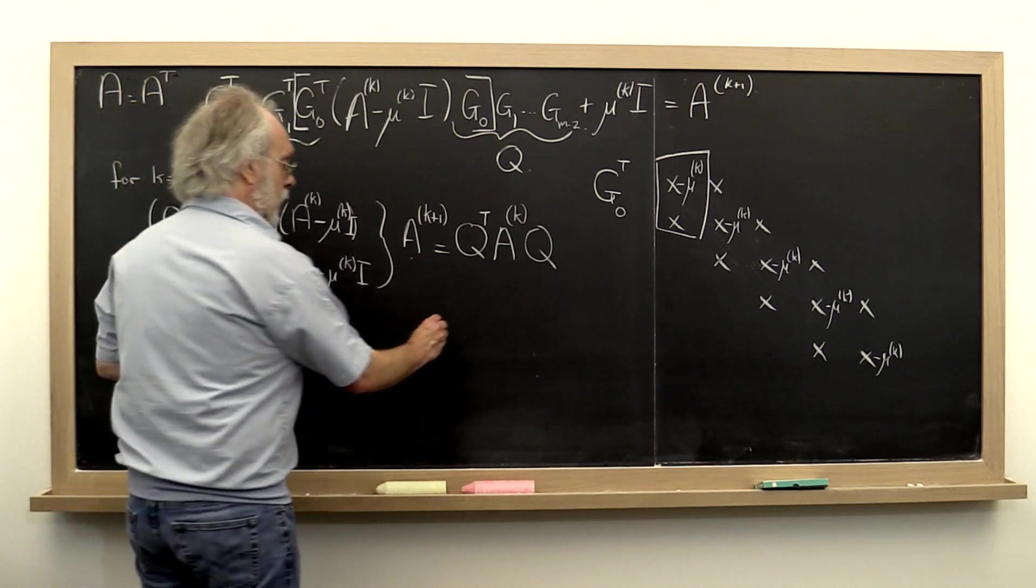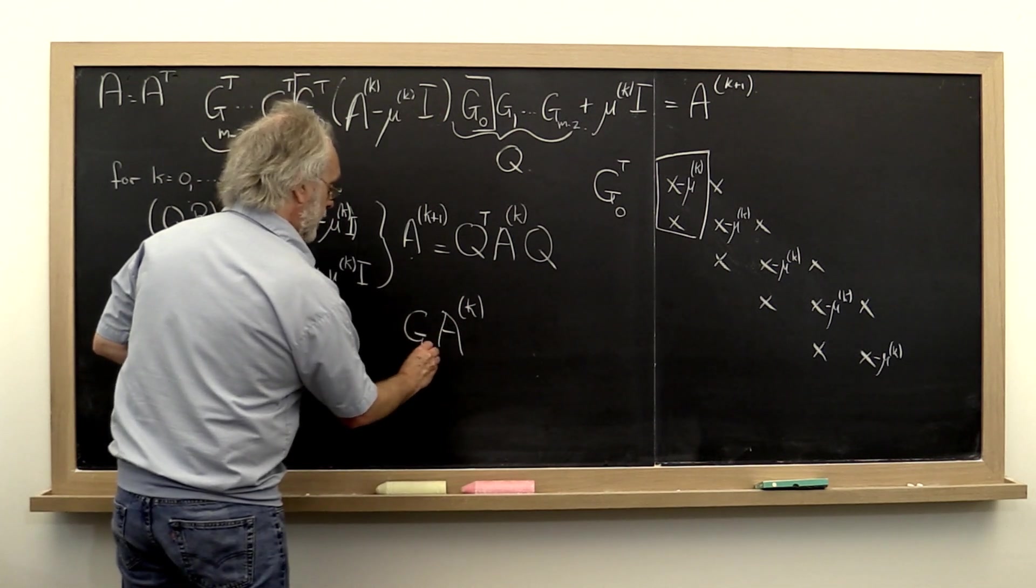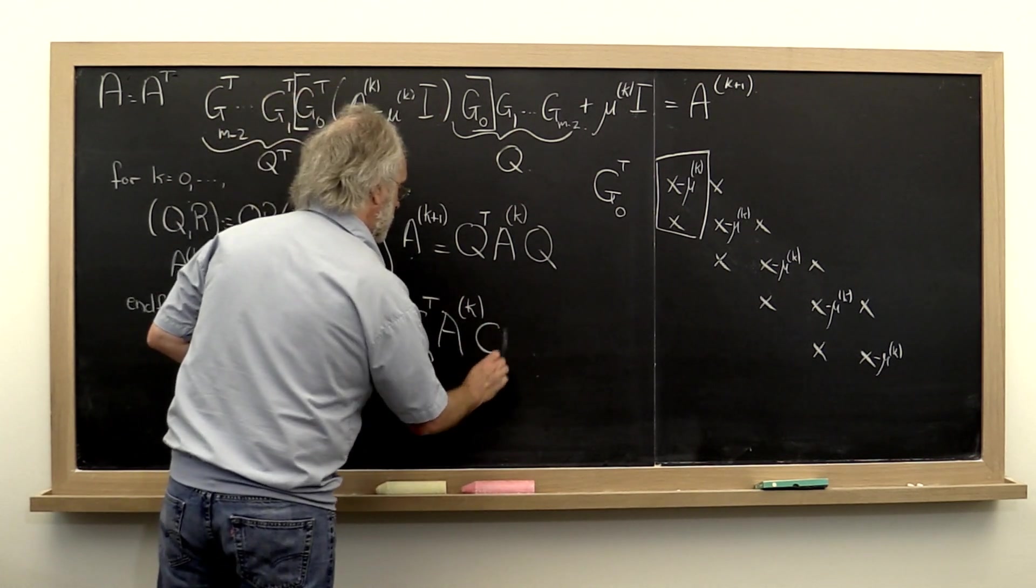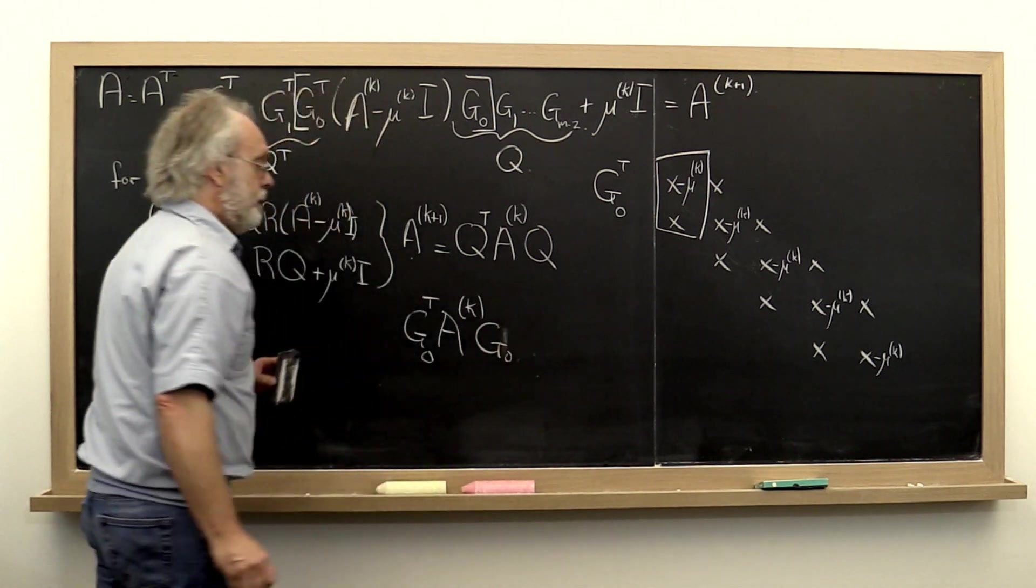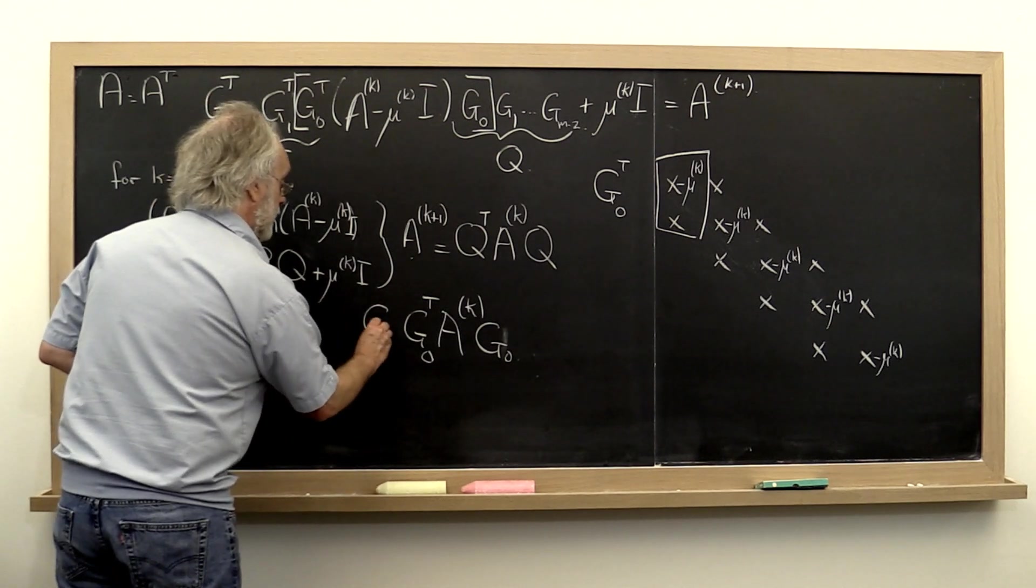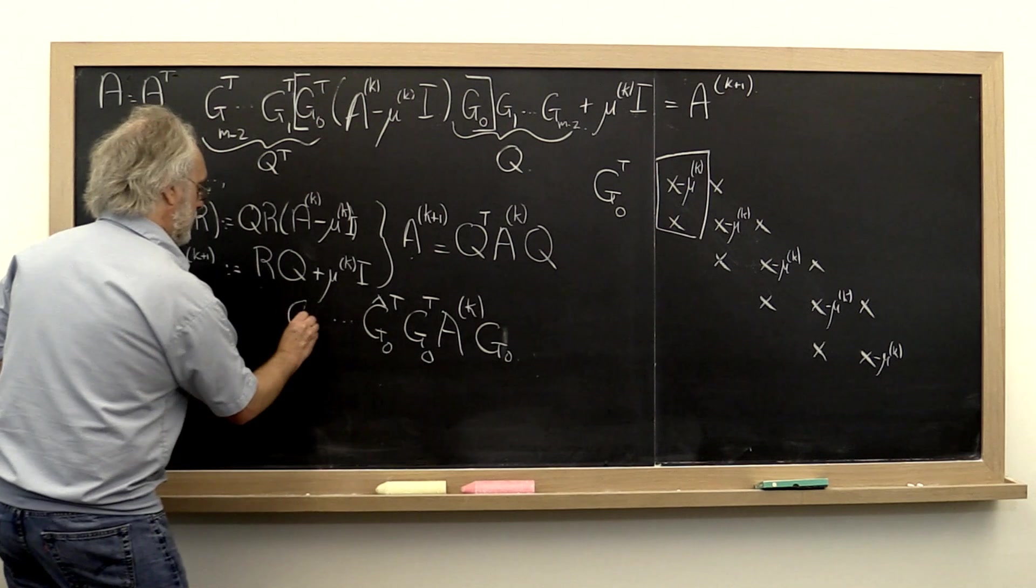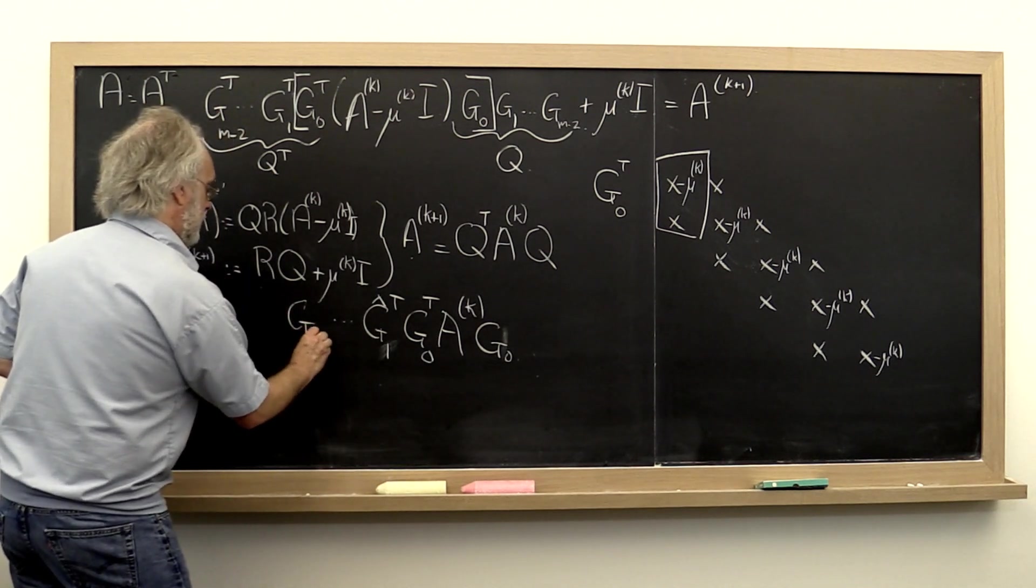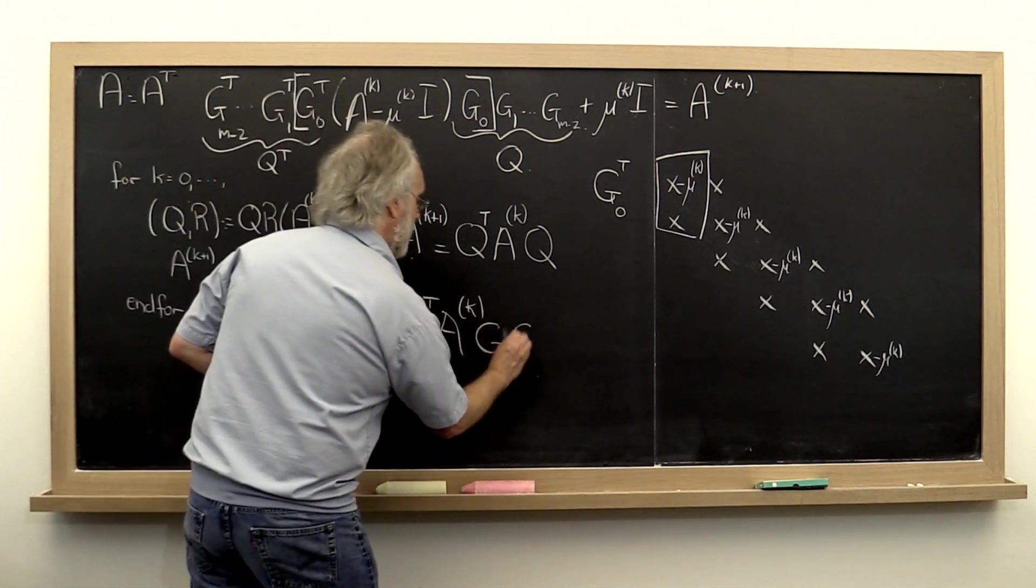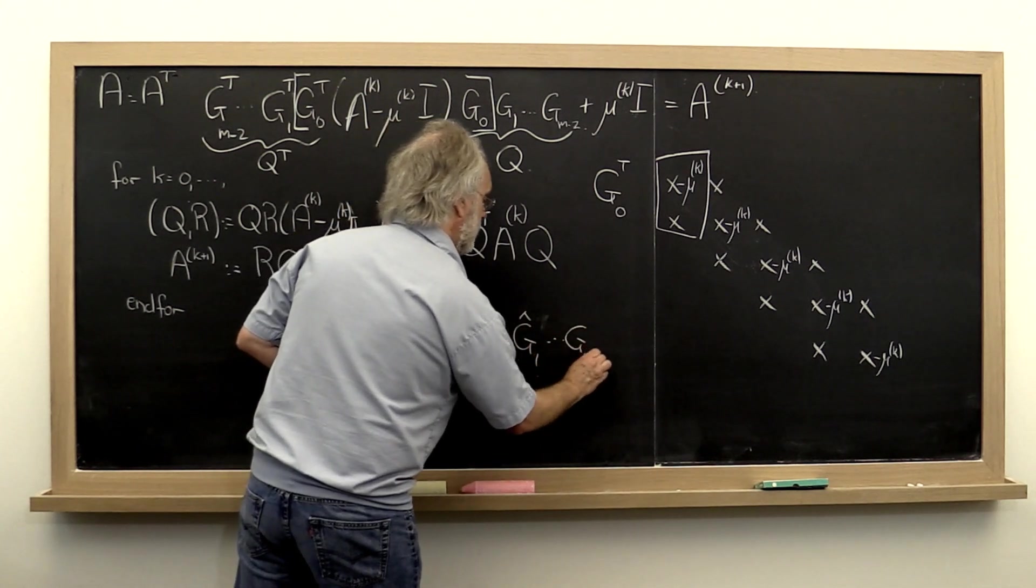Well, we have our current iterant. We have now a first Givens rotation. If we can come up with a different sequence of Givens rotations, let's put hats on them, such that the result of this is again a tridiagonal matrix.